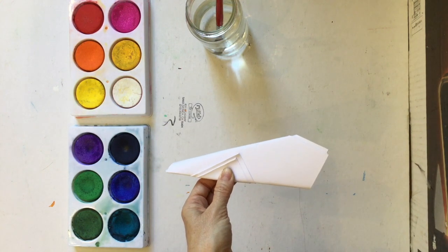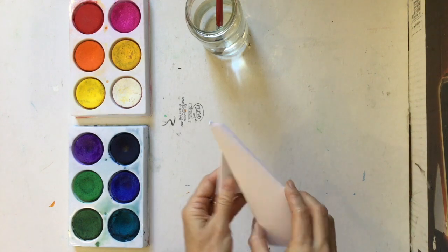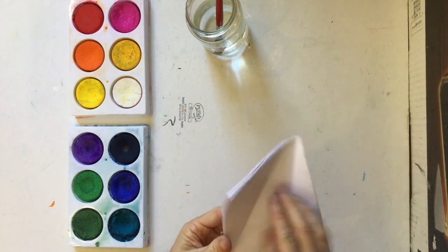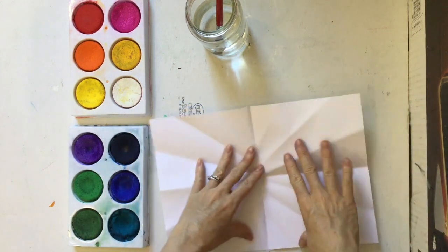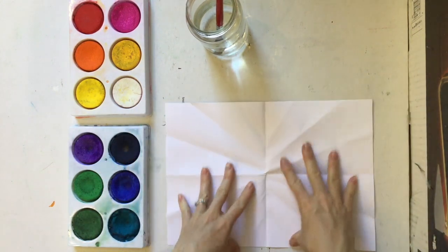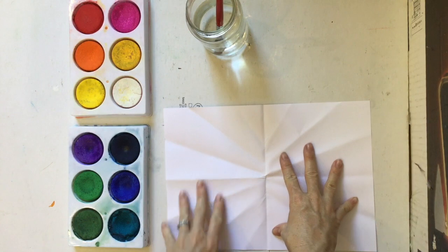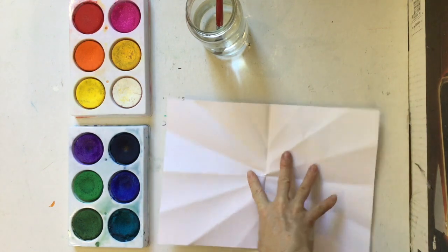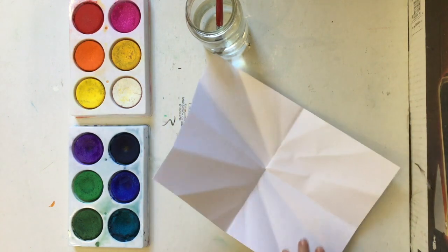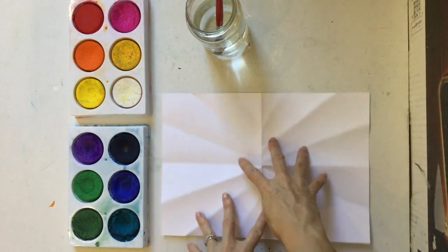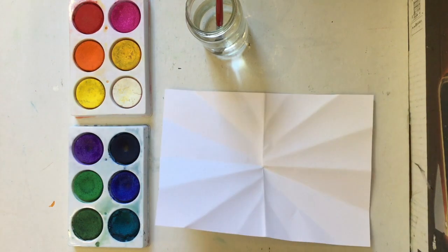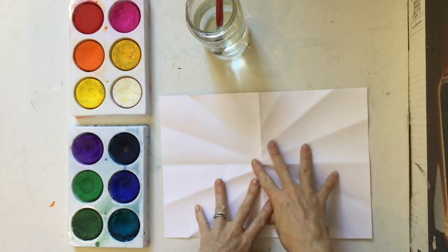And then we're going to open that up and see what we have. And we're going to kind of have a design here looking like beams coming out or something like that. Now again, if you didn't get the folds looking just right, that's okay. You're still going to get an interesting kind of shape in here, doesn't really matter.